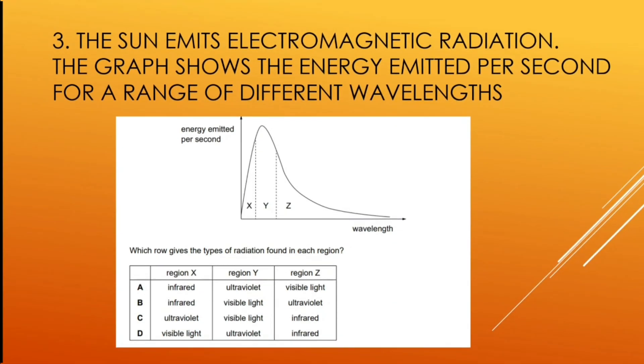Here, the sun emits electromagnetic radiation. The graph shows the energy emitted per second for a range of different wavelengths. Which row gives the types of radiation found in each region? And the correct answer is option C.